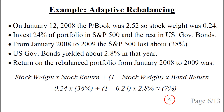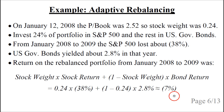So that was the return on our rebalanced portfolio. A full investment in the S&P 500 had lost 38%, US government bonds gained 2.8%, and our rebalanced portfolio lost 7%. So we did a lot better than the S&P 500 and quite a bit worse than the US government bonds.